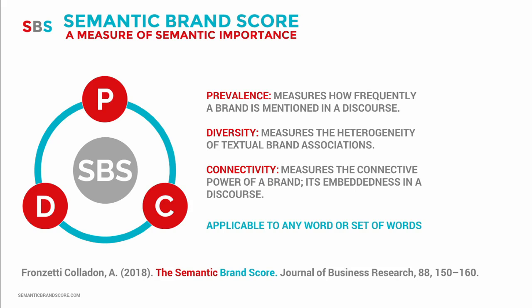The indicator has three dimensions. The first one is prevalence, which measures how frequently a single term or some keywords are mentioned in a discourse. The second one is diversity, which is related to the concept of brand associations — it measures the heterogeneity and uniqueness of the textual associations to a term or concept. The third dimension is connectivity, which measures the connective power of a term, meaning the ability to connect other words or topics.